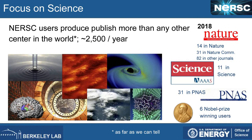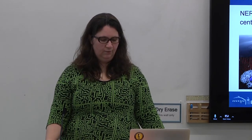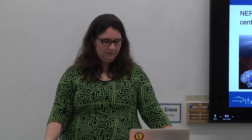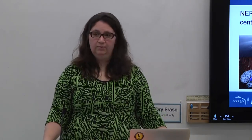NERSC has a huge focus on science. Our users publish more than any other center in the world, about 2,500 publications per year. In 2018 alone we had 14 publications in Nature, 31 in Nature Communications, and 11 in Science. We also have six Nobel Prize winning users, and we're really proud of that.